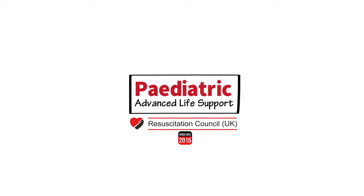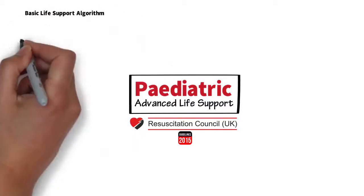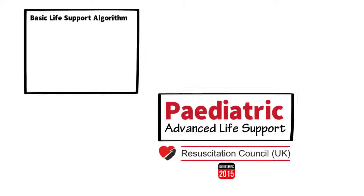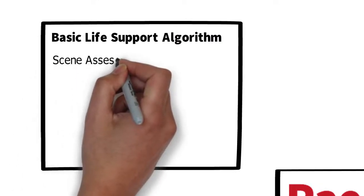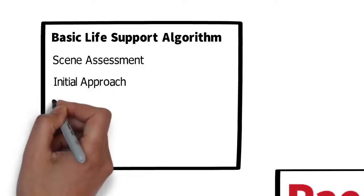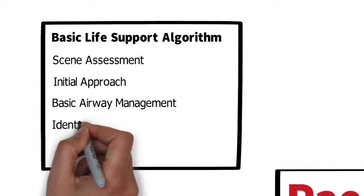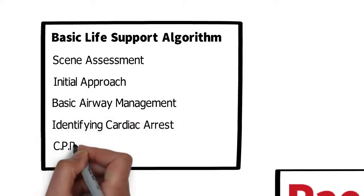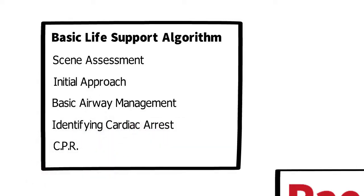We'll build on the paediatric BLS algorithm which we have examined previously. In broad terms that consists of scene assessment, initial approach, basic airway management, identifying cardiac arrest, and CPR. In this session we're going to build on that basis and examine the extra components of ALS.